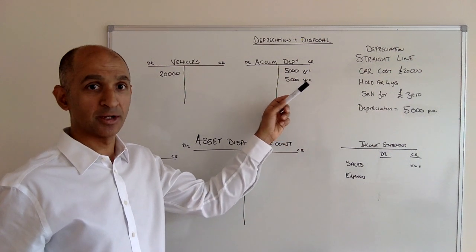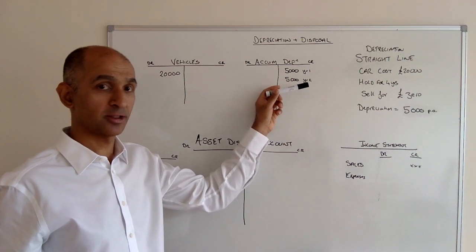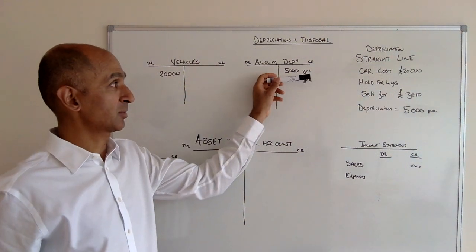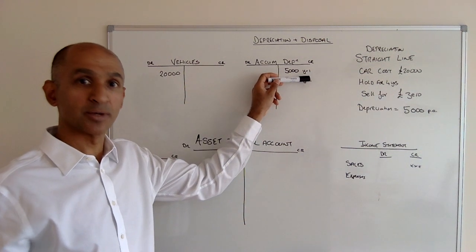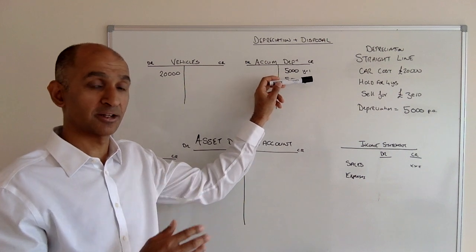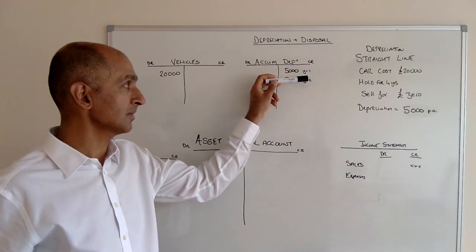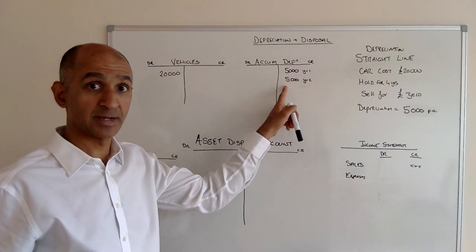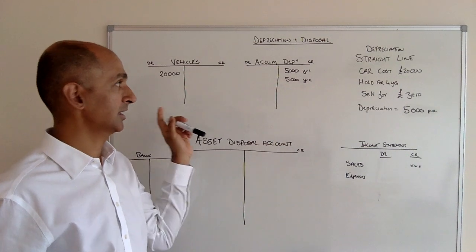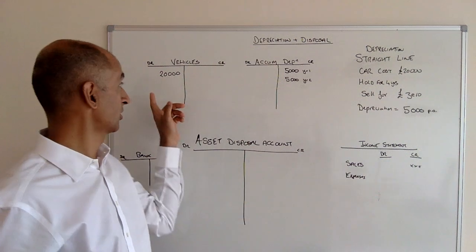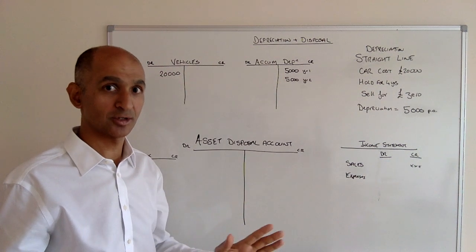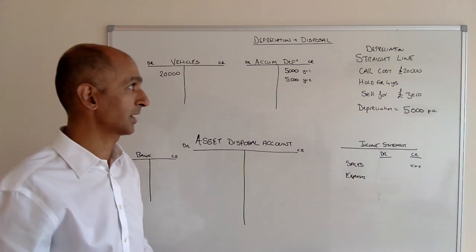At the end of year one, if somebody asked what your assets are worth, they would look at the cost of £20,000, accumulated depreciation of £5,000, and say the net book value of this car is £15,000. At the end of year two, when another £5,000 of straight-line depreciation has been charged, the net book value is reduced to £20,000 minus £10,000, which is £10,000. It's all quite straightforward, stuff you probably know already.